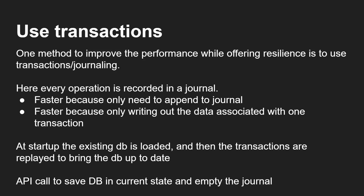One method to improve performance while offering resilience is to use transactions or journaling. Every operation is recorded in a journal. This is faster because you only need to append to the journal — existing data doesn't need to be rewritten. You're only writing out that one transaction, so a short key-value pair like username/Gary isn't a lot of data. At startup, the existing DB is loaded and then transactions are replayed to bring the DB up to date. And as long as you have an API call to save the full database and empty the journal file, at an appropriate moment chosen by the programmer you can save out the database and empty the journal, giving you a nice, secure, resilient database.